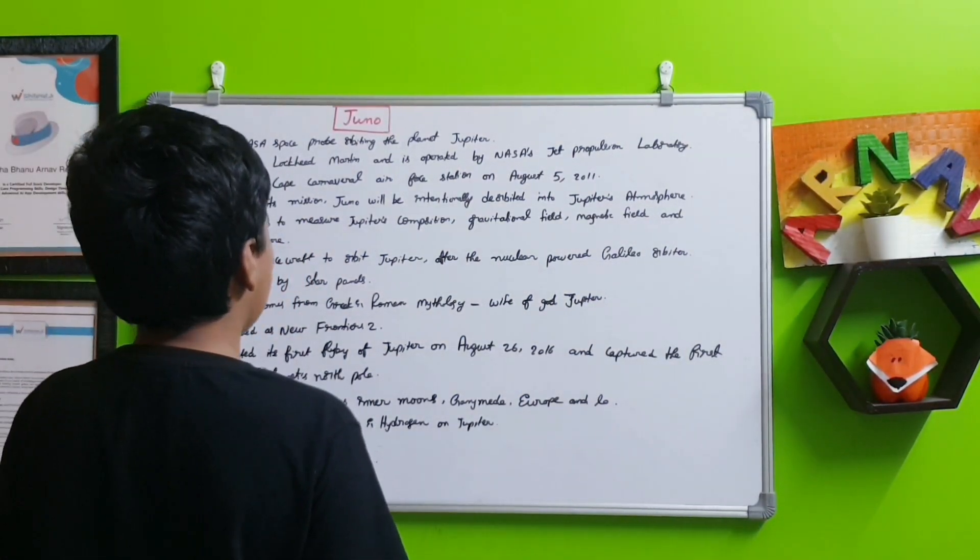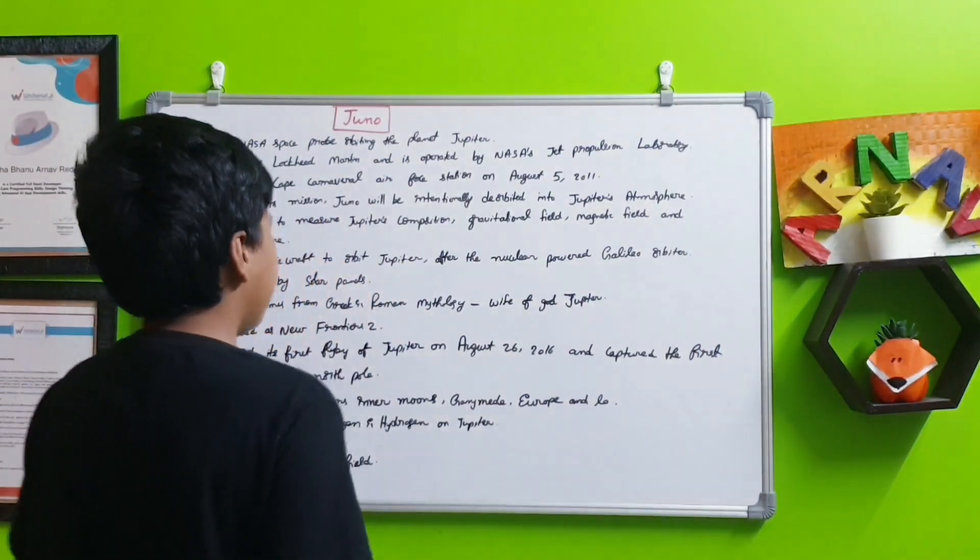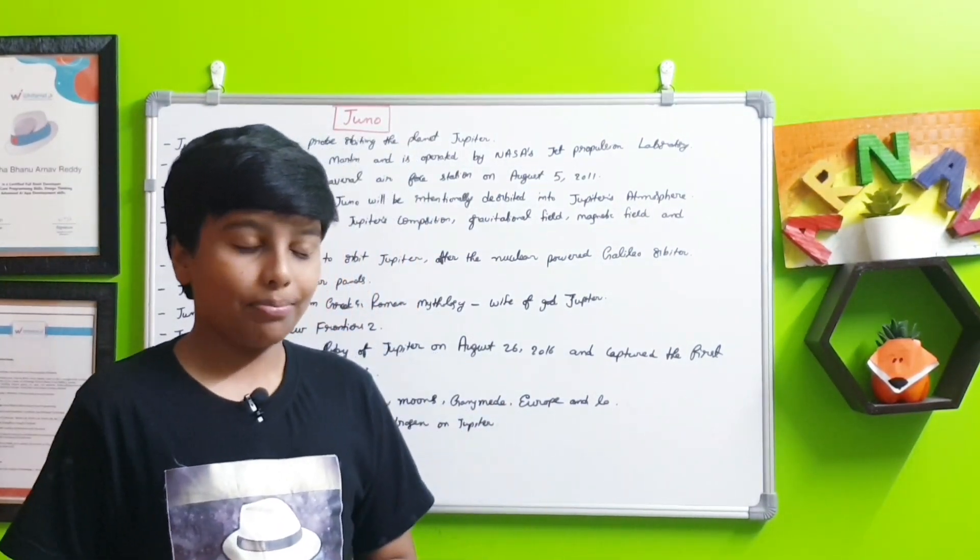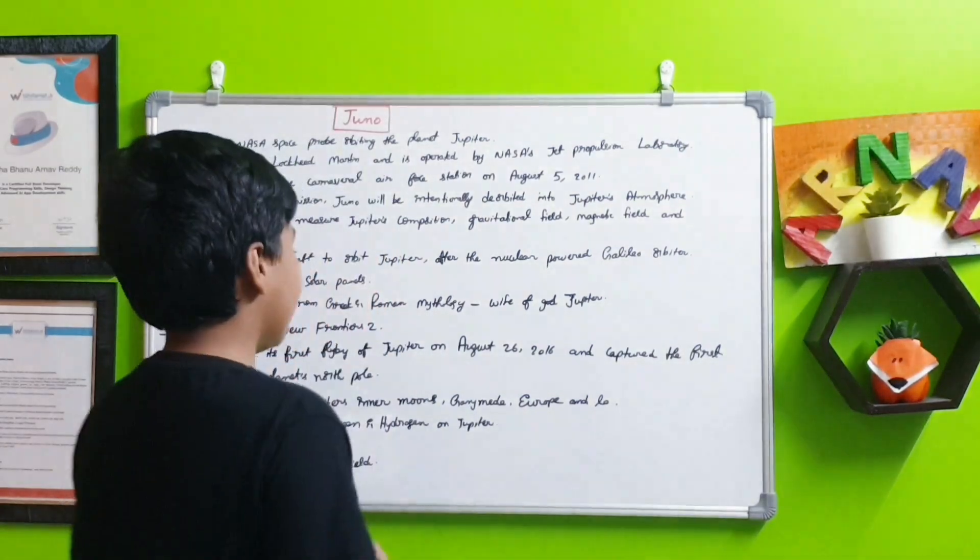It completed its first flyby of Jupiter on August 26, 2016, and captured the first images of the planet's North Pole. That means it was close to getting in orbit.